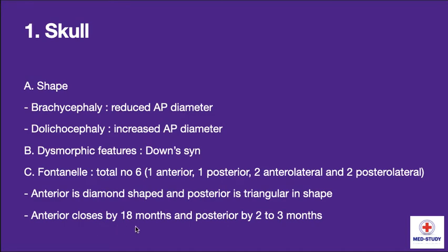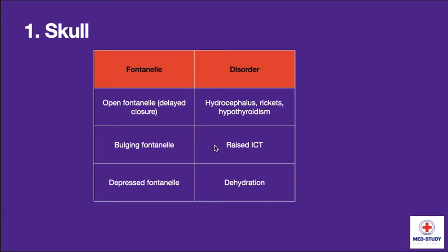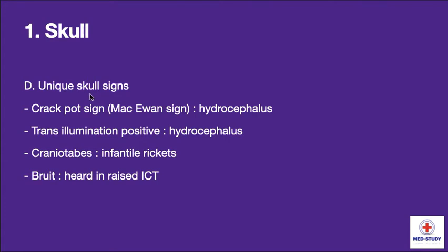The anterior fontanel closes by 18 months and the posterior fontanel closes by 2 to 3 months. Open fontanel or delayed union is seen in hydrocephalus, rickets, and hypothyroidism. Bulging fontanel is seen in raised intracranial tension. Depressed fontanel is seen in dehydration. Unique skull signs include the crackpot sign, also known as Macewen's sign, seen in hydrocephalus. Transillumination test is positive in hydrocephalus. Craniotabes is seen in infantile rickets, and bruits are heard in raised intracranial tension.